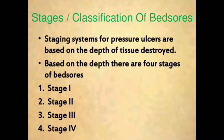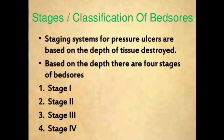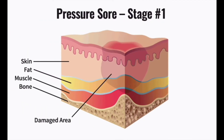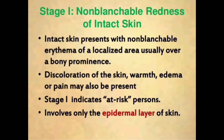Next, the stages or classification of bed sores. Staging systems for pressure ulcers are based on the depth of tissue destroyed. Based on depth, there are four stages: stage one, stage two, stage three, and stage four.